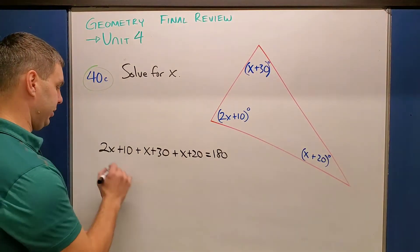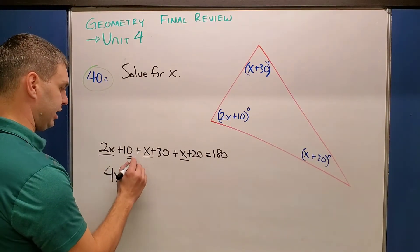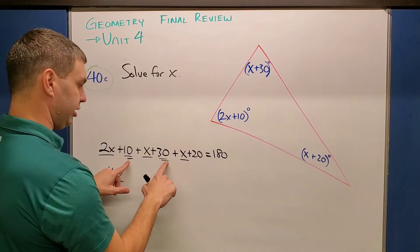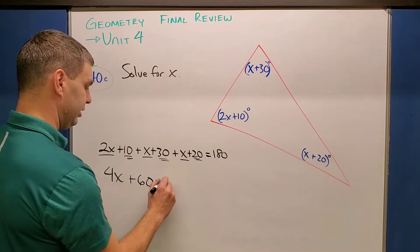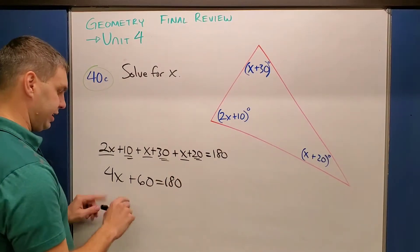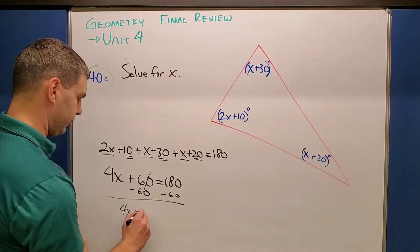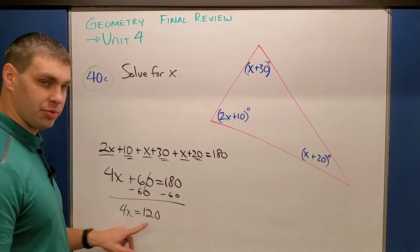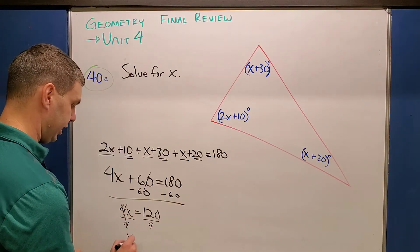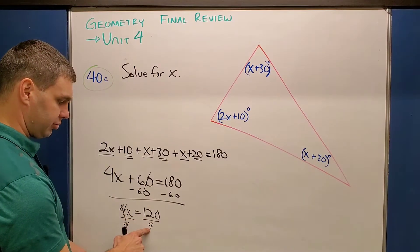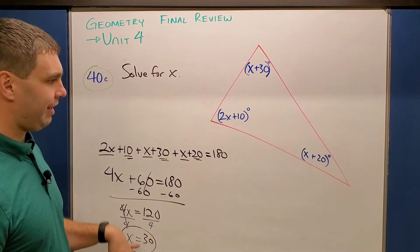So if I do that, I'm going to combine my like terms. 2X plus X plus X is 4X. And then 10 plus 30, that's 40, 40 plus 20 is 60. So 4X plus 60 equals 180. To get the X term by itself, I'm going to subtract 60 on both sides, giving me 120. So 4X equals 120. Four times what is 120? You could say it's 30, or if you didn't know that, you could divide both sides by four and get X equals 30.